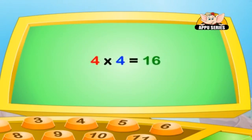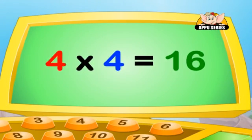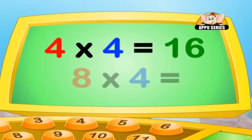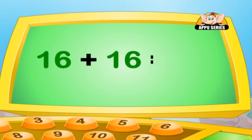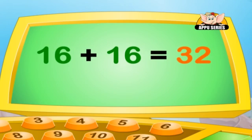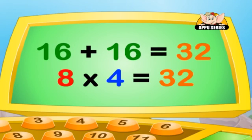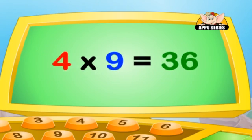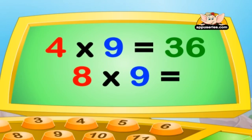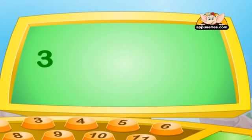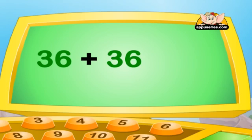If 4 into 4 is 16, then 8 into 4 equals 16 plus 16, which is 32. Let's do another one. If 4 into 9 equals 36, then 8 into 9 equals 36 plus 36, which is 72.